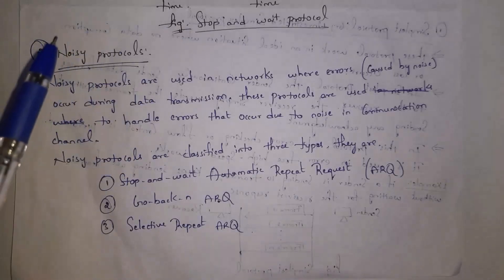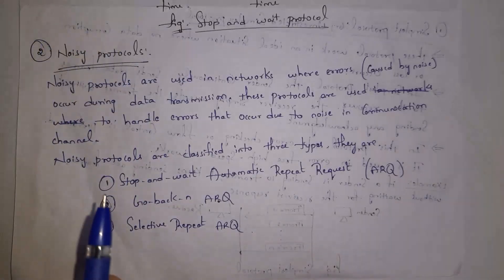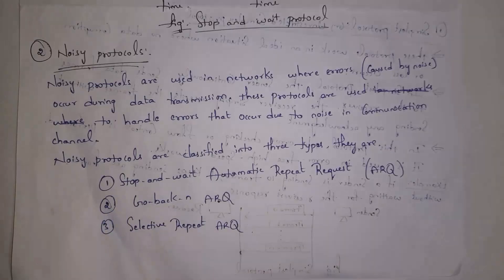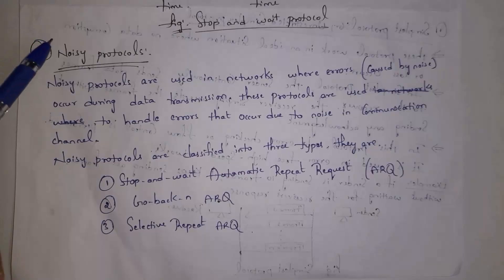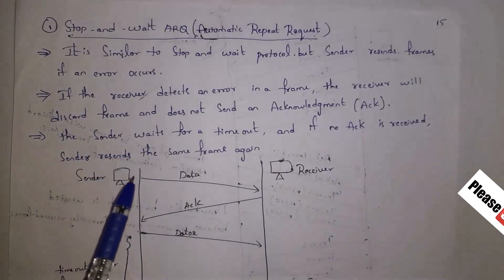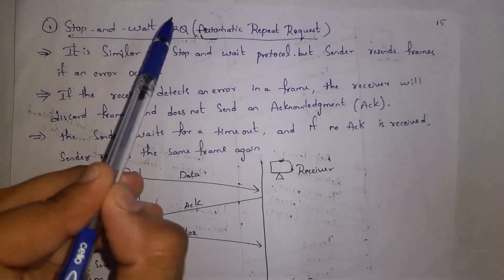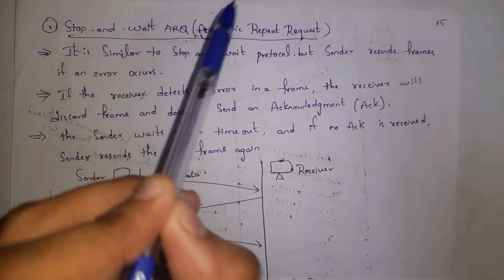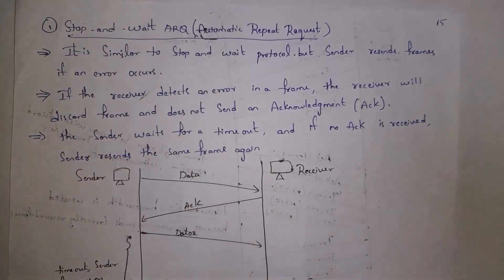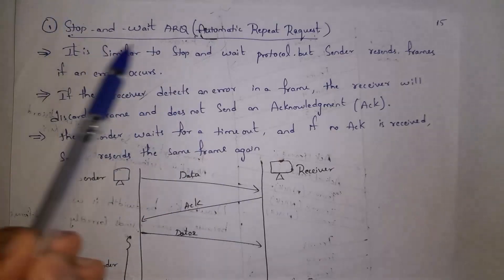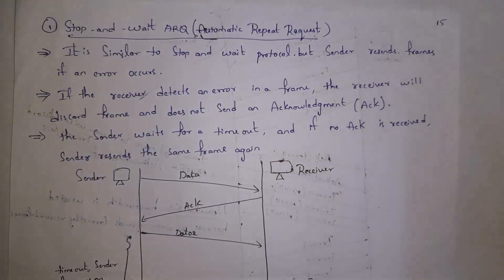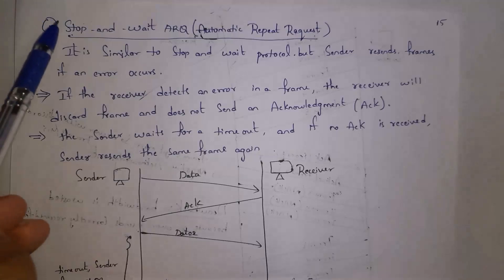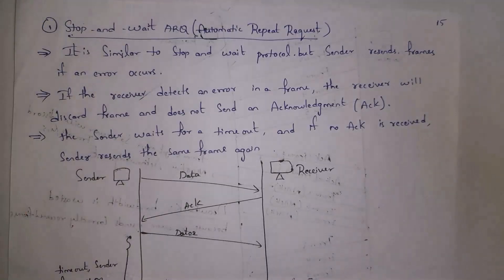Next I will explain what are noisy protocols. We use noisy protocols in networks where there will be errors in data transmission — these noisy protocols will handle errors. The first noisy protocol is stop and wait ARQ, where ARQ stands for Automatic Repeat Request. Stop and wait protocol and stop and wait ARQ are both different: in stop and wait protocol there are no errors in data transmission, whereas in stop and wait ARQ there will be errors in data transmission.